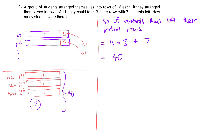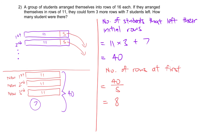From here, we can calculate the number of rows at first: 40 divided by 5 gives us 8 rows. Why 8? Because every single row initially had 5 students leave. So in order to reach 40, with groups of 5, there must be 8 rows. If there were 9 rows, that would be 45; if 7 rows, only 35 people. So it must be 8 rows at first.